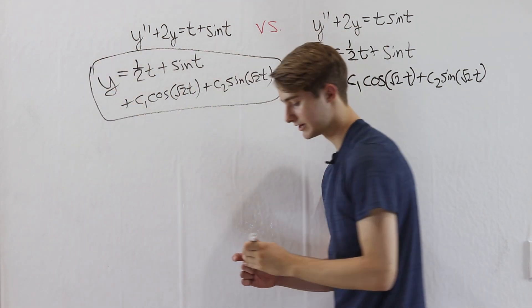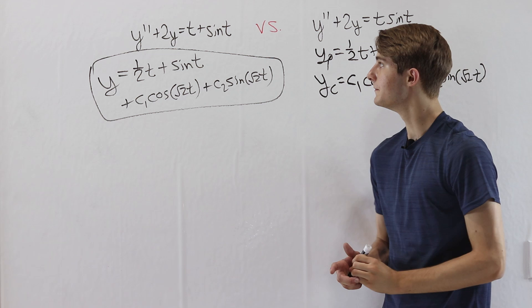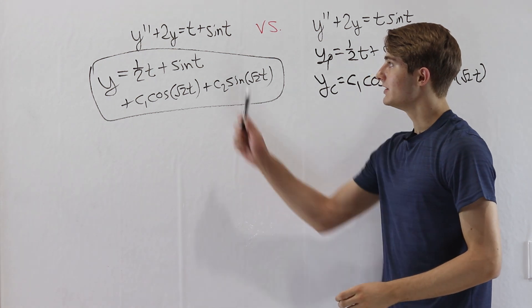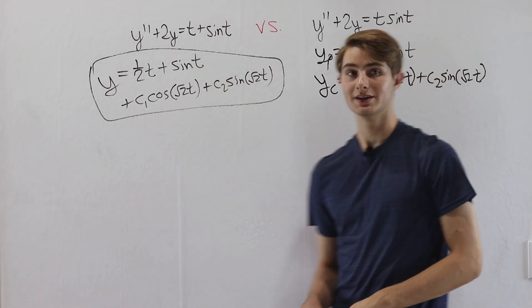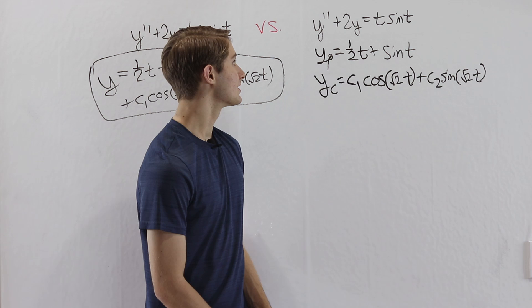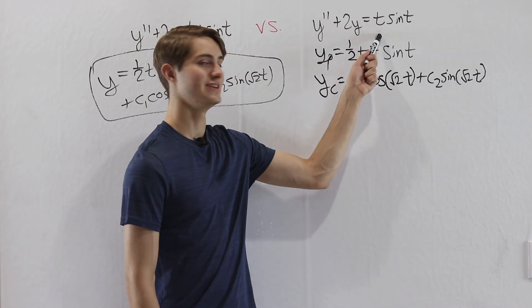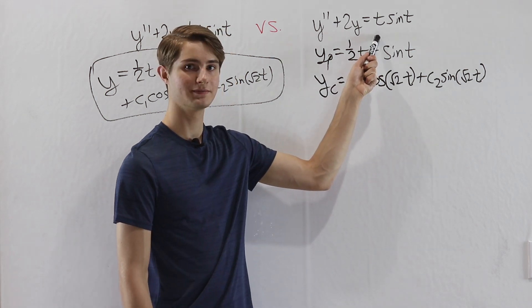With that, the final answer for the first differential equation is y equals one half t plus sine t plus c1 cosine root 2t plus c2 sine of root 2t. Now it's time to work on the second equation.